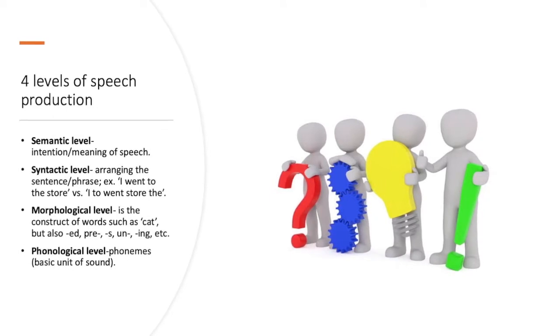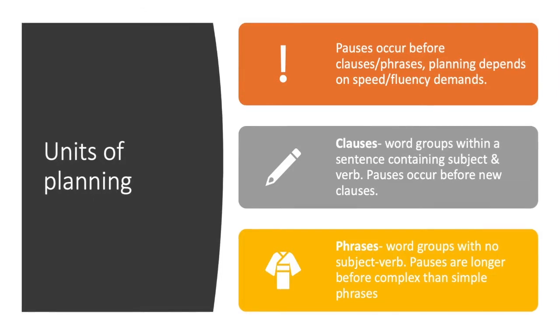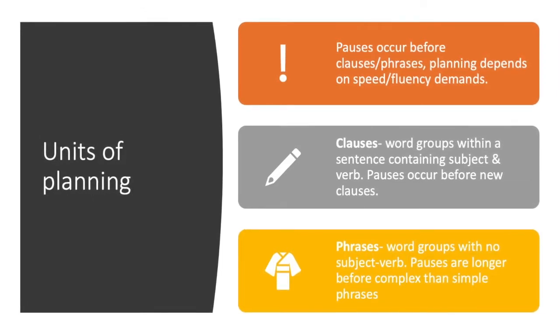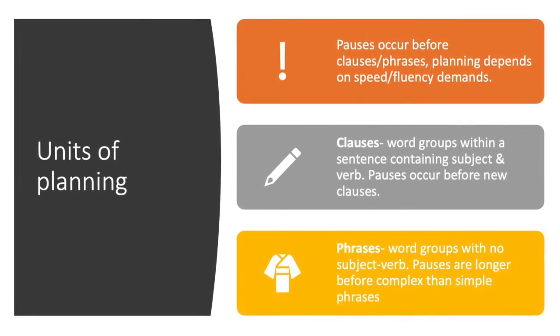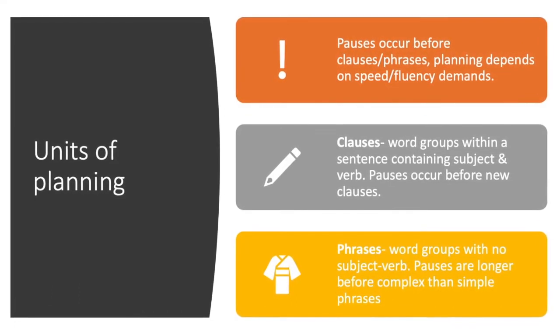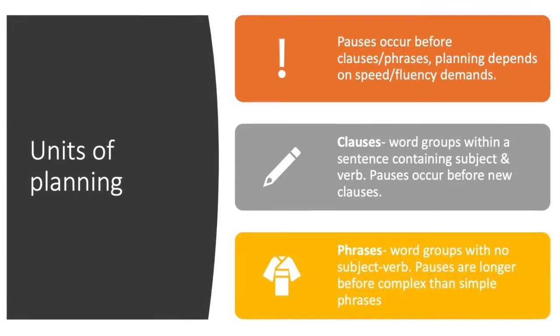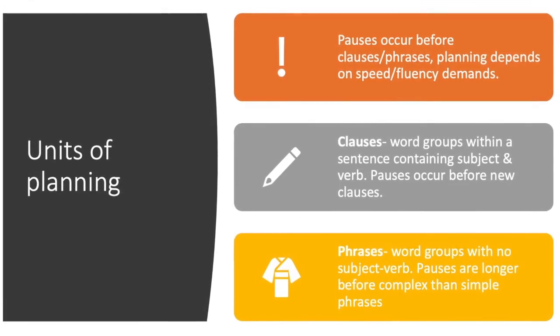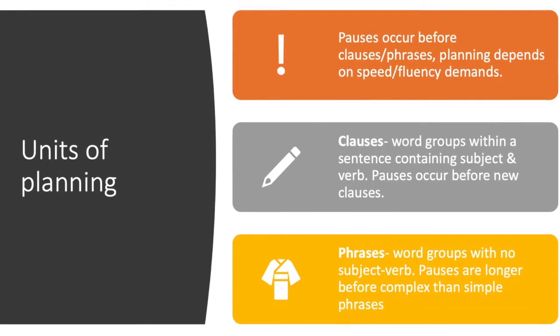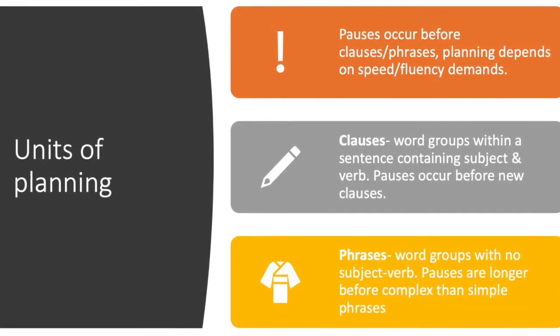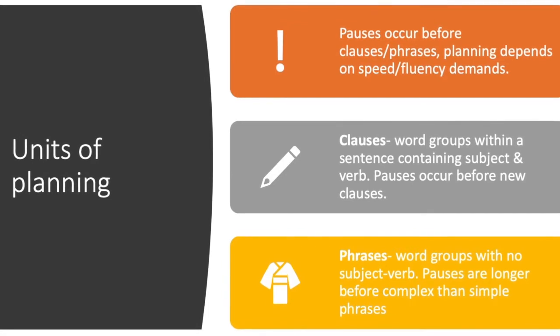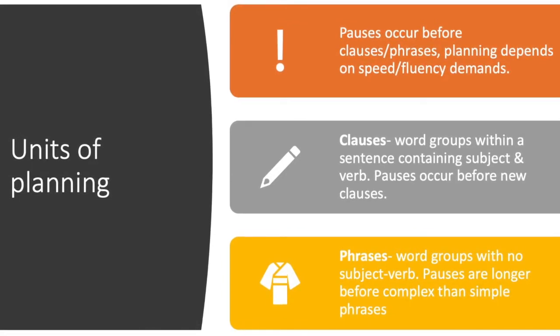Phonological level. These are phonemes and these are the basic units of sound. So units of planning: pauses usually occur before clauses or phrases and planning depends on speed or fluency demands. Clauses are defined as word groups within a sentence and they contain subjects and verbs. Pauses occur before new clauses. Phrases are word groups with no subject verb. Pauses are longer before complex than compared to simple phrases.